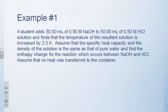In this first example, we're going to add 50 milliliters of 0.5 molar sodium hydroxide to 50 milliliters of 0.5 molar hydrochloric acid. We find that when we do this, the temperature of the solution increases by 3.3 Kelvin or 3.3 degrees Celsius. So what reaction is going on here? Nothing but this acid-base neutralization reaction — sodium hydroxide reacting with hydrochloric acid.